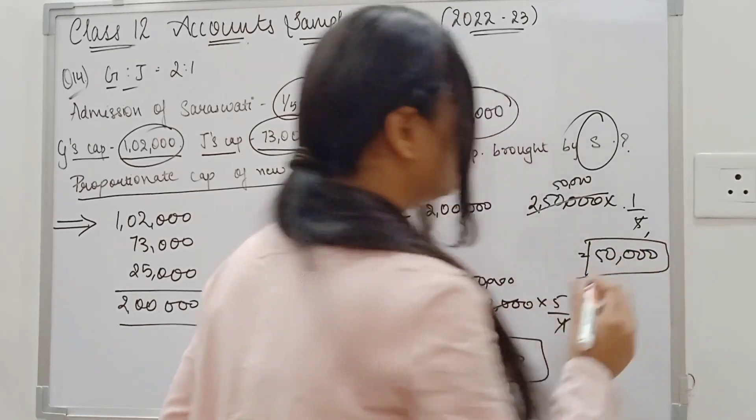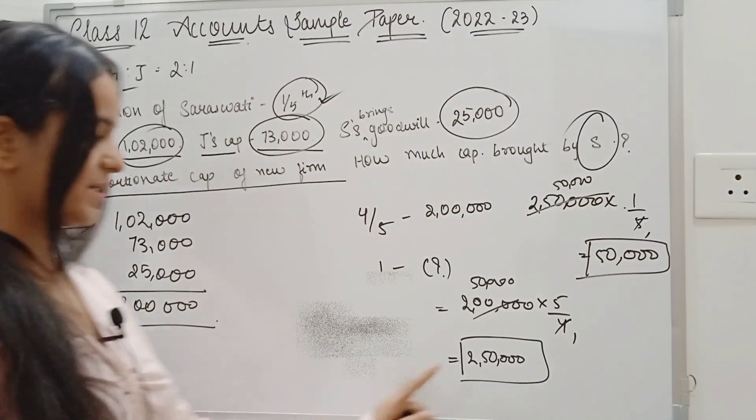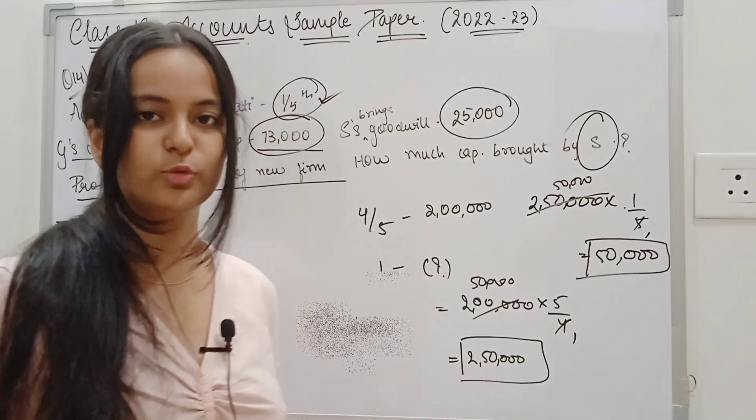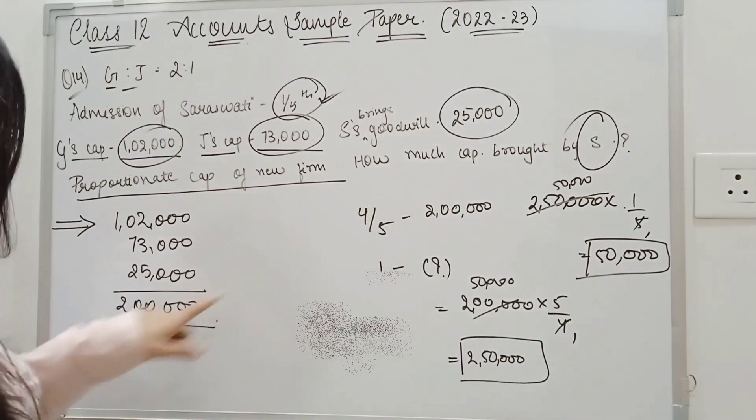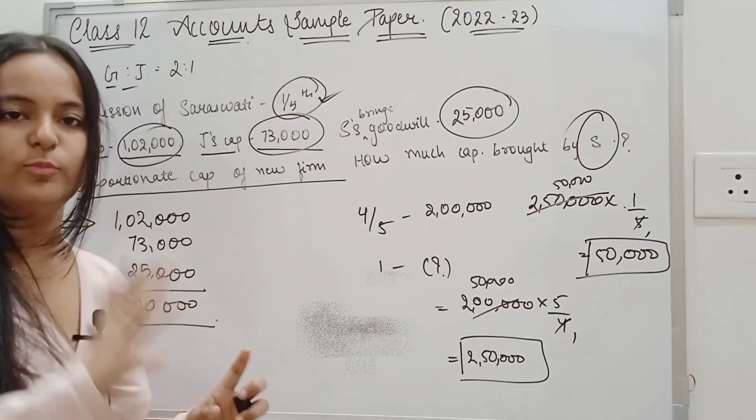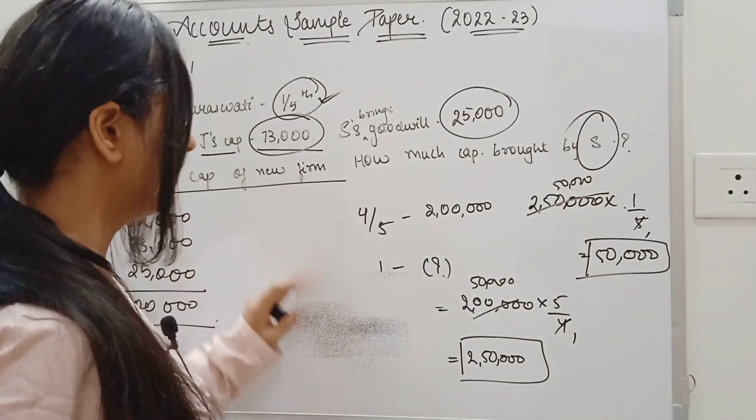If you have to check that if your answer is right or wrong, then you can remove it. 2 lakh 50,000 is the total capital. Now, I repeat this question.